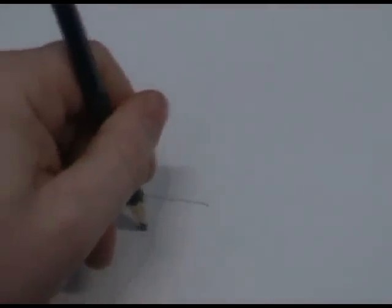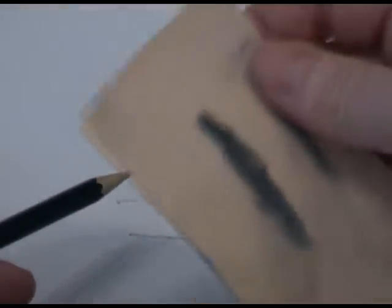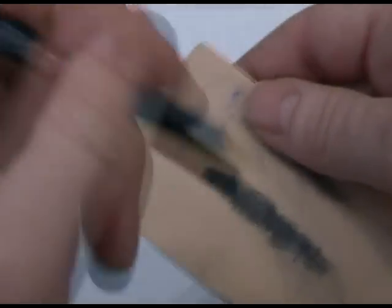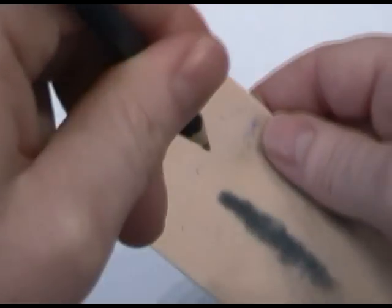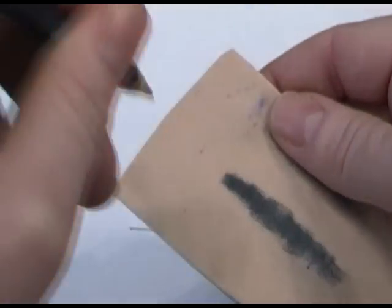So again, what they're doing is that they're going in like this with the machine, from this point, going across, and then lifting out. And all you're going to get when you do this is basically this. Even though it looked like I'm going like this, I'm basically having an in point, coming across and having an out point, quite robotic like this. And that is not how you shade.